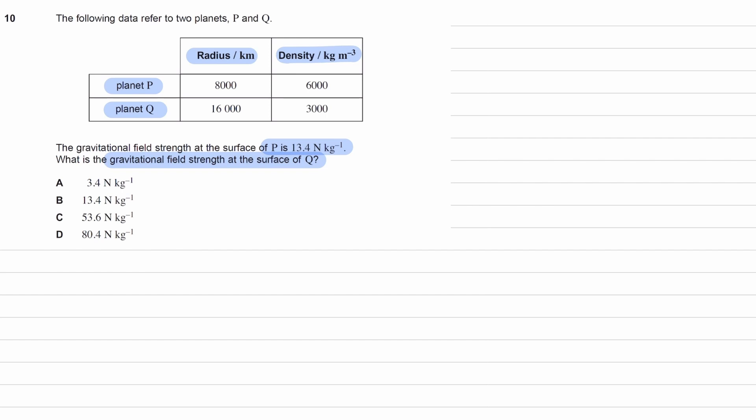We're considering gravitational field strength, which is GM over r squared. We're given information on the radius, but we're not given direct information on the mass. Rather, we're given information on density.